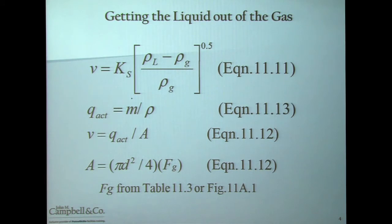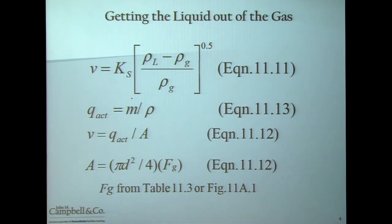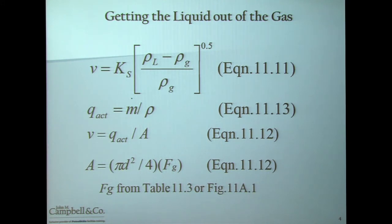We have to apply a correction factor, F-sub-g, for horizontal vessels, because in a horizontal vessel you are occupied by liquid, so your vapor space is going to be reduced as your liquid level increases. That is not the case in a vertical vessel.